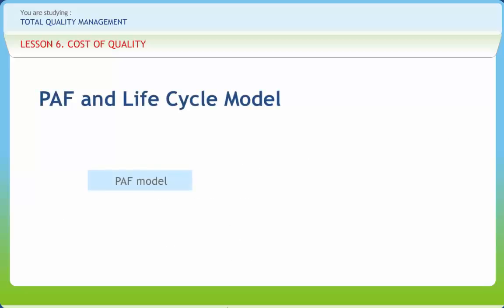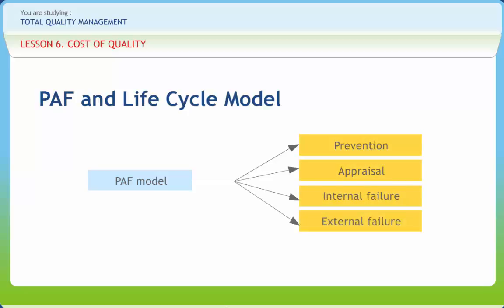The PAF model groups the cost under the four primary cost categories such as prevention, appraisal, internal failure, and external failure.